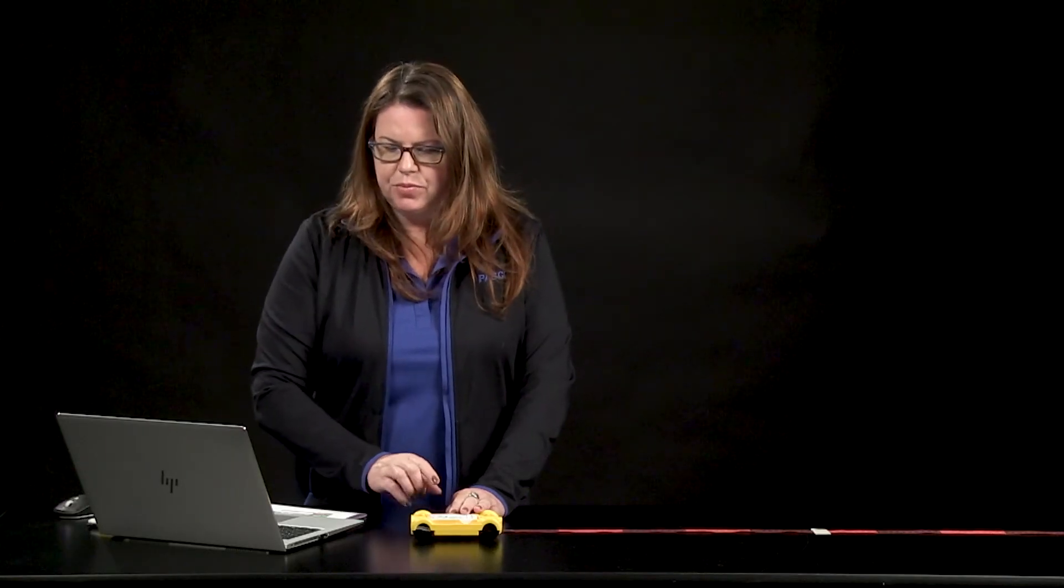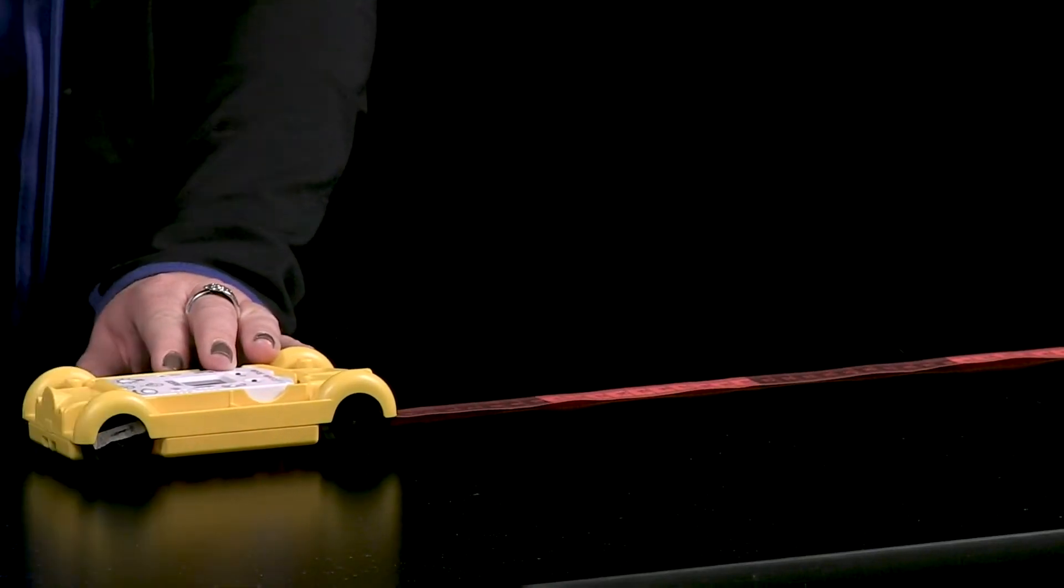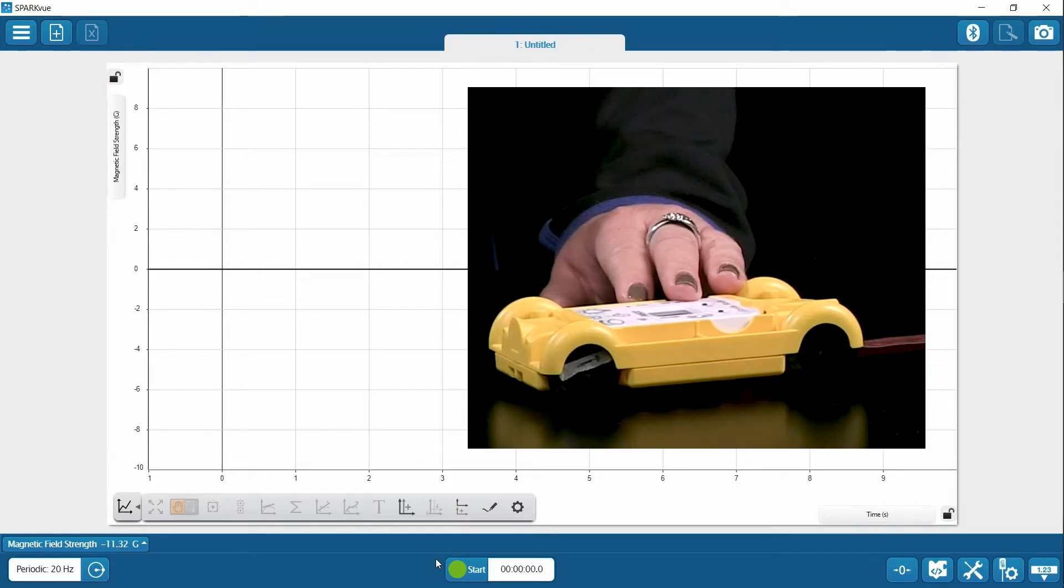For this activity, it's really important to get as close to zero as possible and maybe even mark your wheel with an arrow so the students know where to start. You'll see why this is important in a second. Let me get it as close to zero as I can.